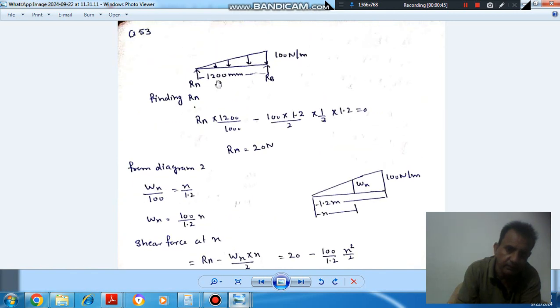Taking moment about this point, Ra will be Ra into 1200 by 1000 meters. And for this UVL, the moment is: total load is 100 into 1.2 by 2, that is the total load, and the total load will act at the distance 1 by 3.